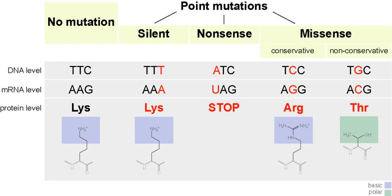Sickle cell anemia is caused by a point mutation in the beta-globin chain of hemoglobin, causing the hydrophilic amino acid glutamic acid to be replaced with the hydrophobic amino acid valine at the sixth position. The beta-globin gene is found on the short arm of chromosome 11. The association of two wild-type alpha-globin subunits with two mutant beta-globin subunits forms hemoglobin S. Under low oxygen conditions, such as being at high altitude, the absence of a polar amino acid at position 6 of the beta-globin chain promotes non-covalent polymerization of hemoglobin, which distorts red blood cells into a sickle shape and decreases their elasticity.